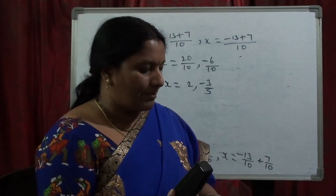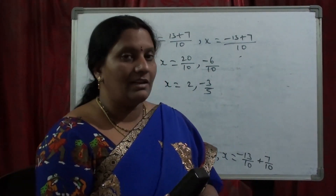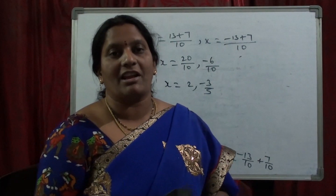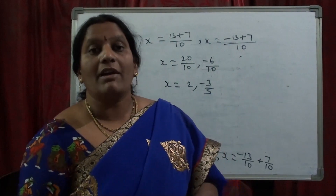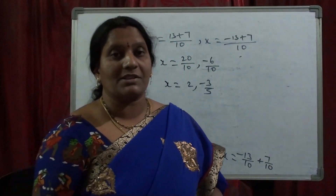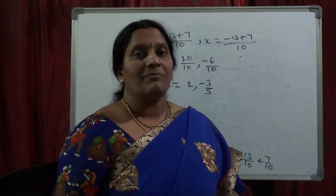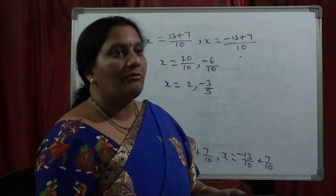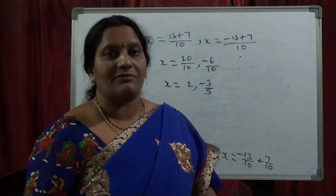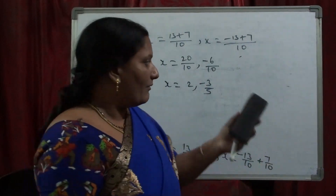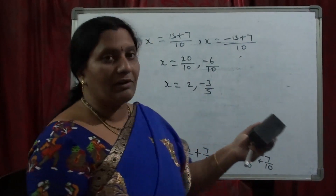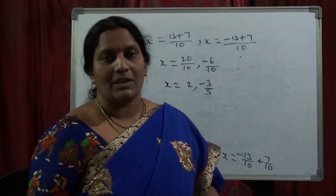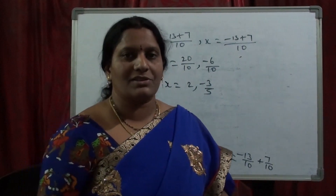By using the complete square method, we can find the roots of the quadratic equation when the coefficient of x² is 1, and in the same way, we can find the roots when the x² coefficient is not equal to 1 also. Thank you very much.